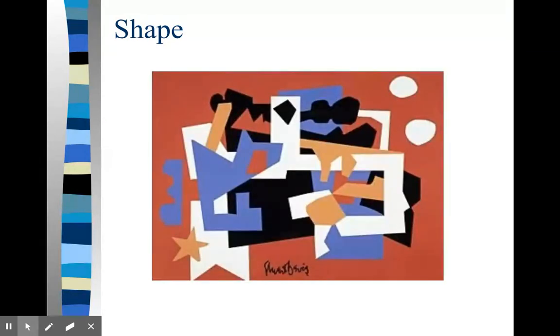Here's a painting done by Stuart Davis and it's all about shapes. You can see that the only way we can sense that there's any depth or use of space at all is because it appears that these shapes are overlapping each other but in fact the shapes are flat.